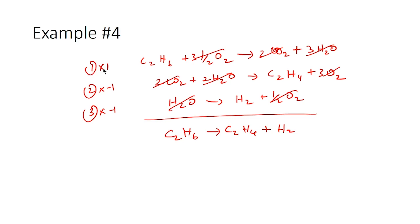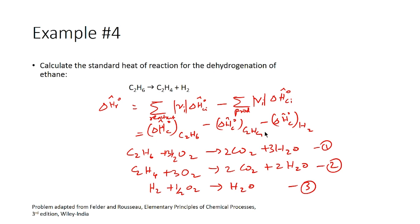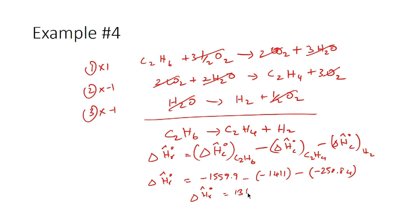Applying the same operations to heats of combustion: ΔH_R = ΔH_C(C2H6) − ΔH_C(C2H4) − ΔH_C(H2) = −1559.9 − (−1411) − (−285.84) = 136.9 kJ/mol. This is the heat of reaction for the dehydrogenation of ethane, showing how Hess's law can be applied using heat of combustion data.